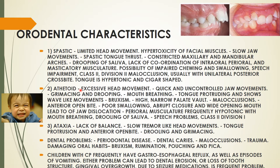The next is athetoid. There is excessive head movement — the difference from spastic being that spastic has limited head movement while athetoid has excessive head movement. There is quick and uncontrolled jaw movement, whereas in spastic it was slow. There is grimacing — where the teeth are clenched with eyes wide open — and drooping of saliva.